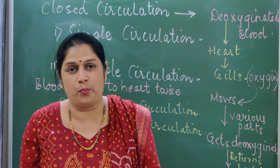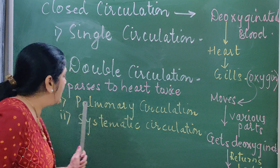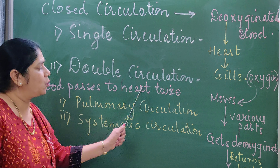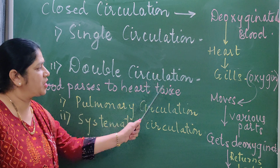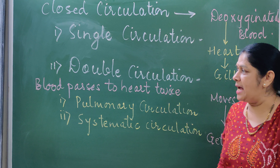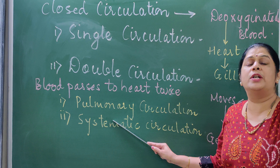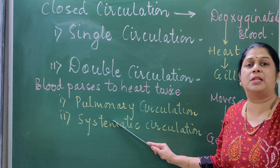The type of blood which flows to the heart is deoxygenated blood. From the heart, the blood will go towards the lungs for purification and oxygenation, then it will move to various parts. The blood which returns back will be in the form of deoxygenated blood. When this deoxygenated blood returns back to the heart, again the second cycle will begin. Such type of circulation is called single circulation.